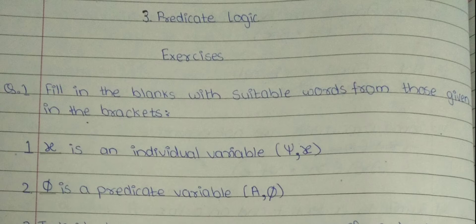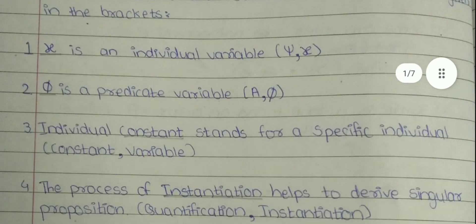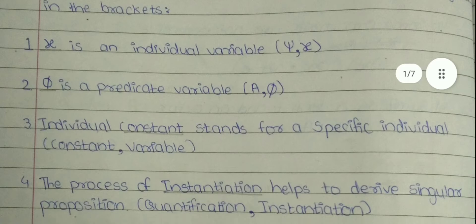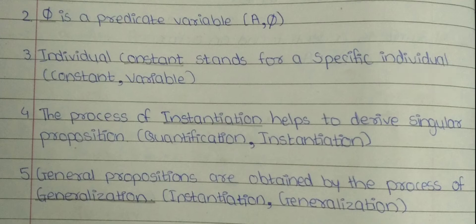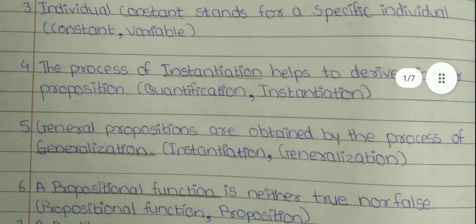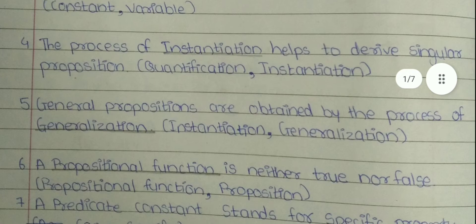2. Dash is a predicate variable. The answer is Phi. 3. Individual dash stands for a specific individual. The answer is constant. 4. The process of dash helps to derive singular proposition. The answer is instantiation. 5. General propositions are obtained by the process of dash. The answer is generalization.